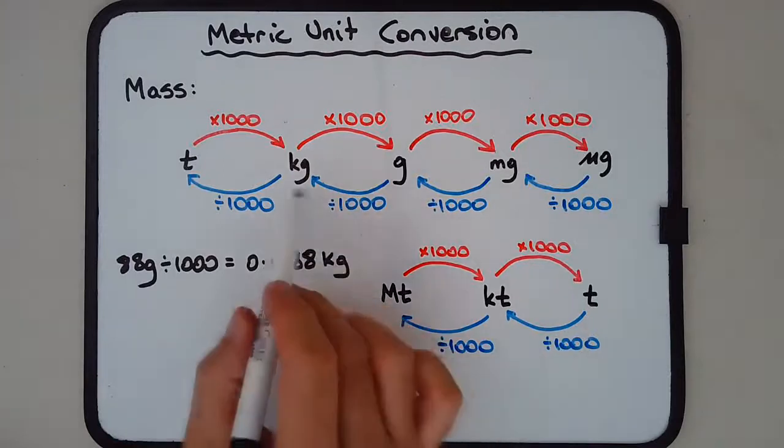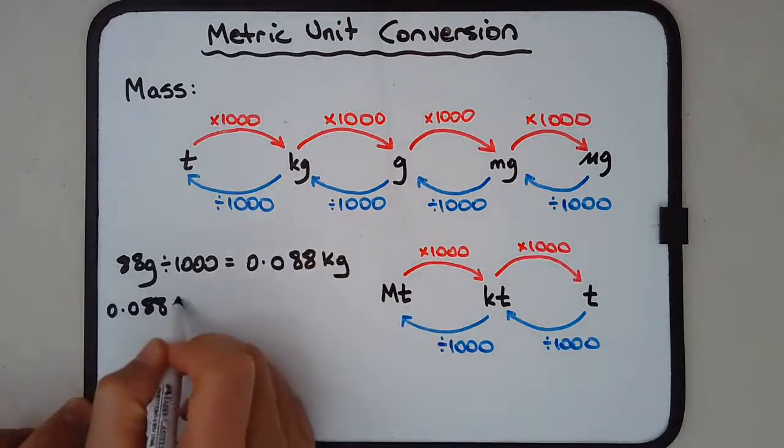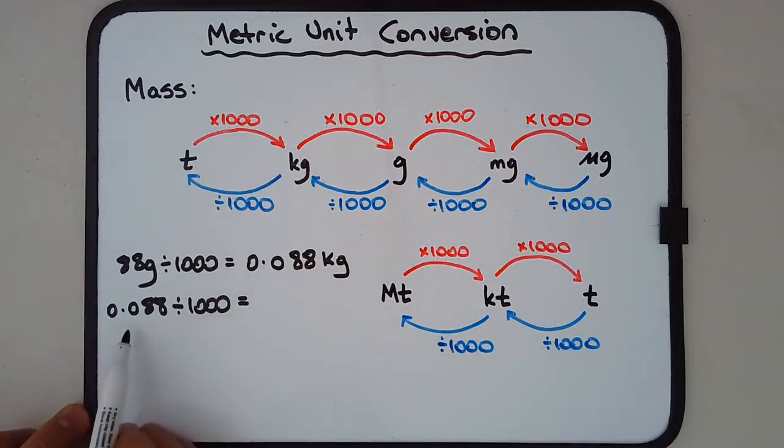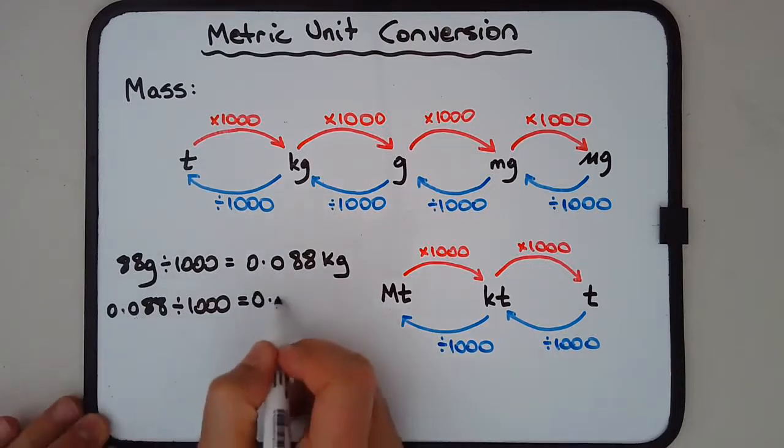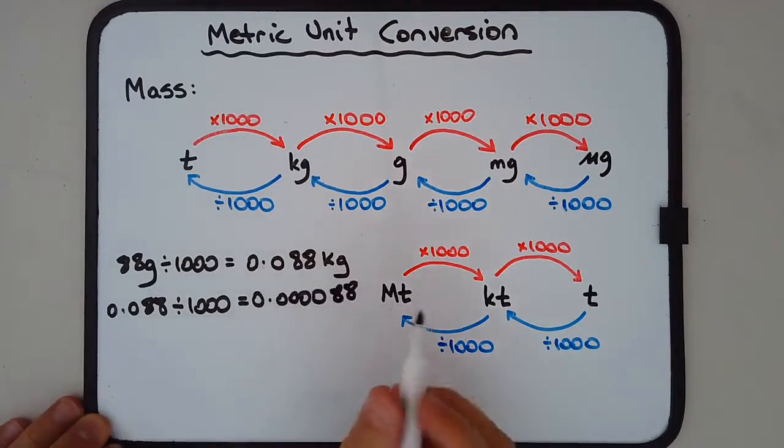Now let's convert kilograms into tons. So 0.088, again, divide that by a thousand. Dividing by a thousand basically puts in an extra three zeros after the decimal point. So we've got one zero there, we're going to add another three zeros, making it four zeros. One, two, three, four, eight, eight. No calculator necessary, and that's in tons.